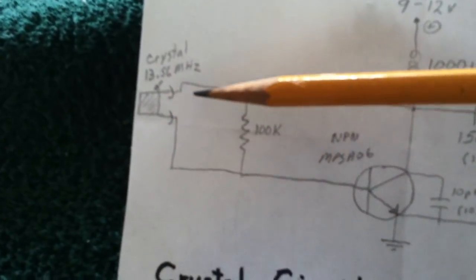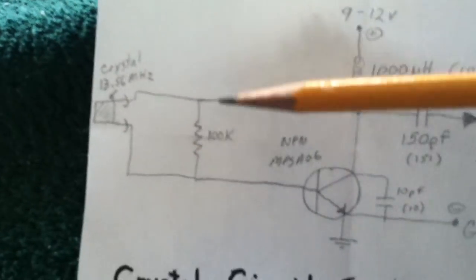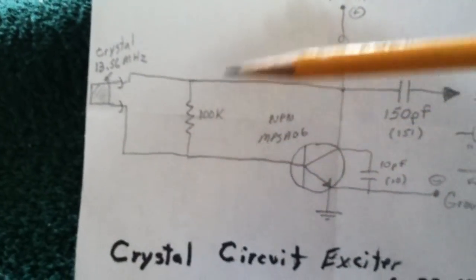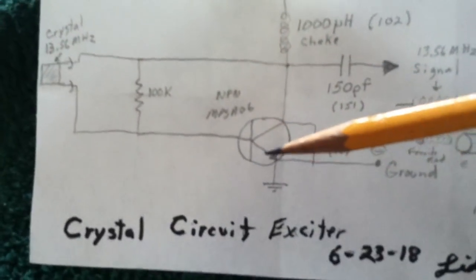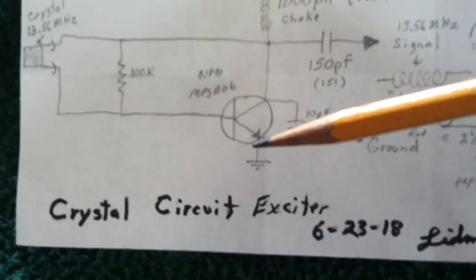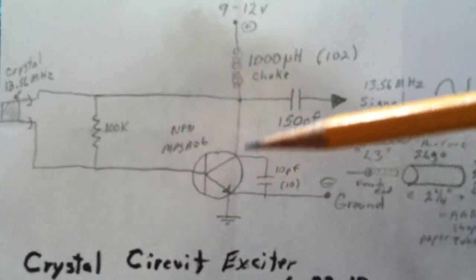It's a 13.56 megahertz crystal. This is correct. It's a 100K resistor. The best transistor I've found is an NPSA06, like what Dr. Stiffert uses in its SEC. The best inductor is a 1000 microhenry choke.